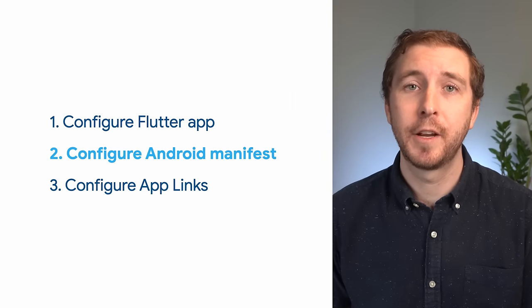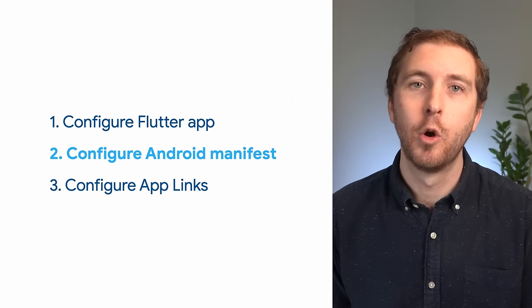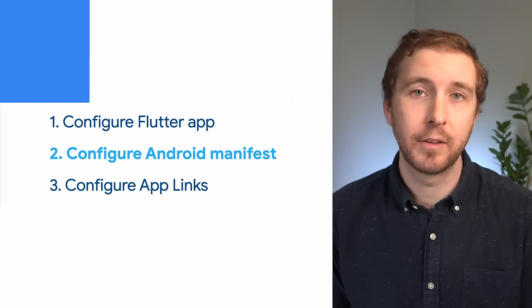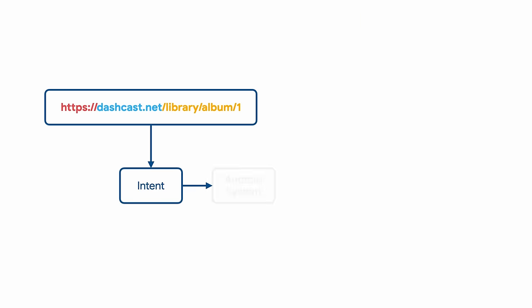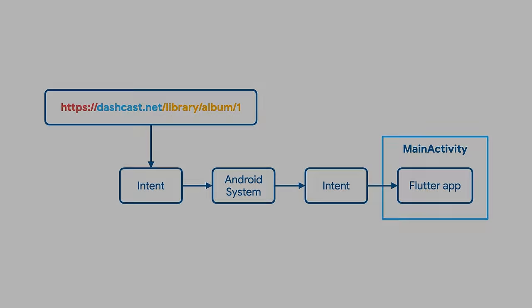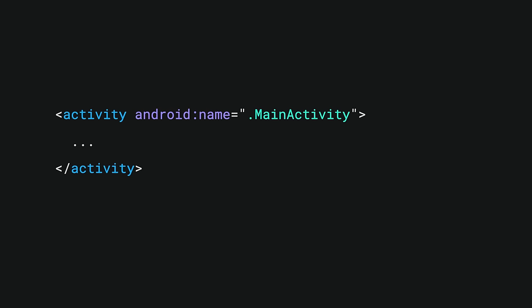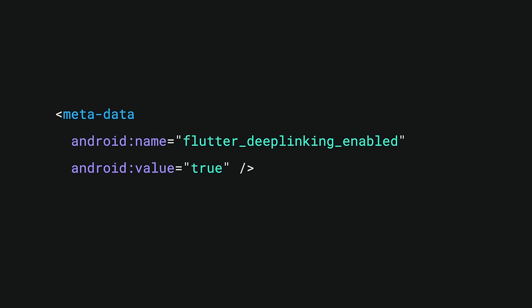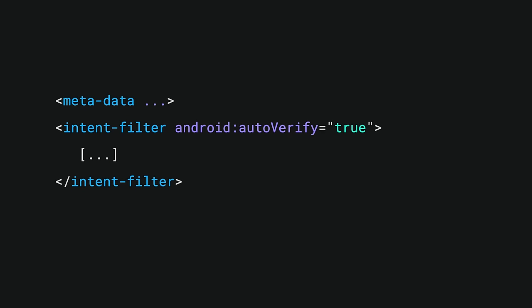The second step is to configure the Android operating system to open the main activity when the user invokes an intent we want to handle, for example, by clicking on a link to our app's website in a web browser. Once the main activity starts, Flutter will pass along the route information to your app. In the app's Android manifest file, we'll add some code to the main activity. The first thing we'll add is the metadata tag to configure the Flutter framework to handle deep links. After that tag, we'll use an intent filter, which we'll use to configure our Android app to handle intents coming from the URL to start the main activity.